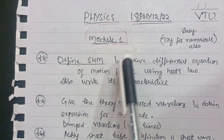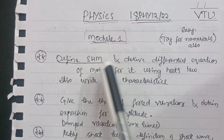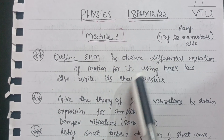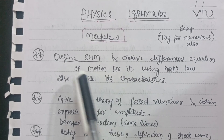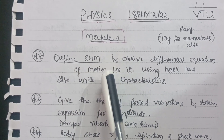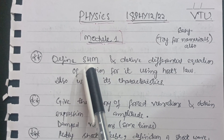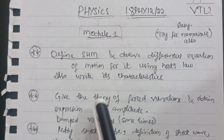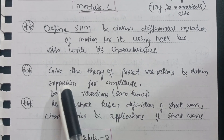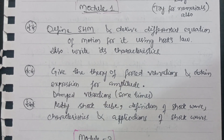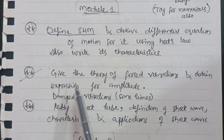In Module 1, the most important question is: define Simple Harmonic Motion (SHM) and derive the differential equation of motion using Hooke's Law, and write its characteristics. Focus on this SHM derivation. The next important question is: give the theory of forced vibrations and obtain the expression for amplitude. This is one of the most frequently asked questions in the VTU examination.